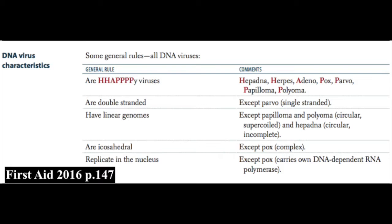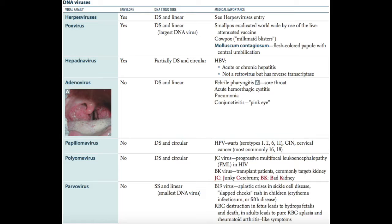Let's take a look at the different DNA virus families. We can categorize and characterize them by whether or not they have an envelope, what their DNA structure is, and then we'll talk about the medically important viruses of each family. Starting with Herpes viruses — these do have an envelope and have double-stranded linear DNA genomes.